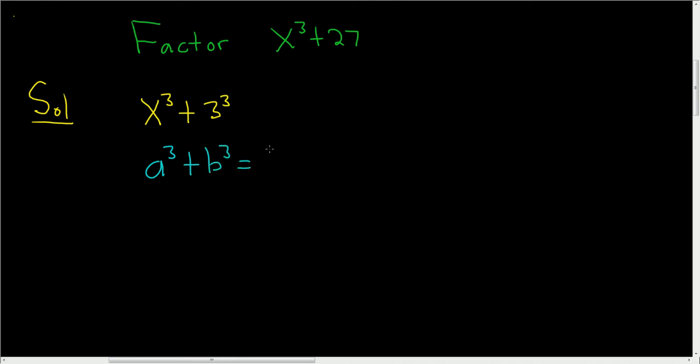An easy way to remember the formula is you keep the sign, so a plus b, and then it's a squared, and then it's the opposite sign. So if you have a plus here, you put a minus here. Likewise, if you had a minus here, you would put a plus here. So here we have a minus ab plus b squared.